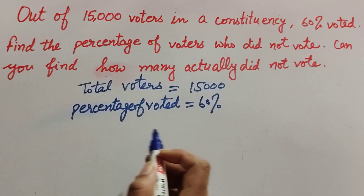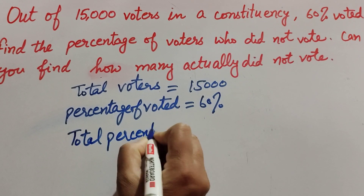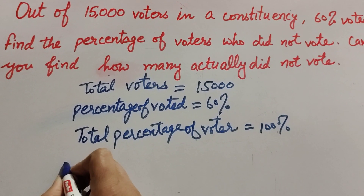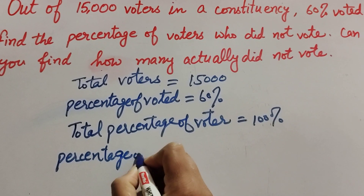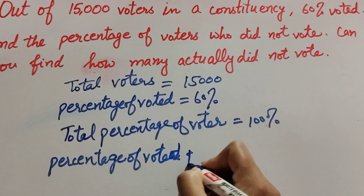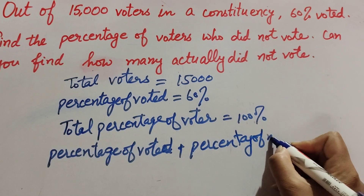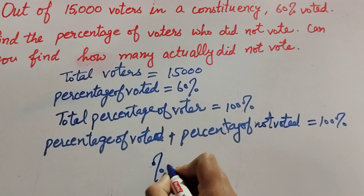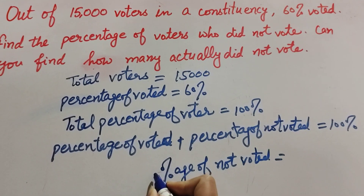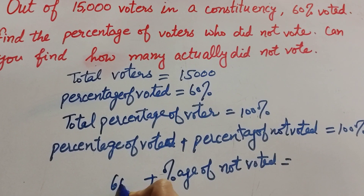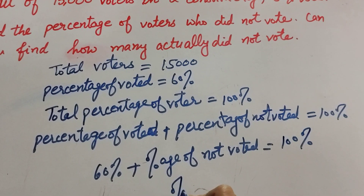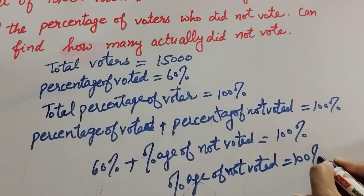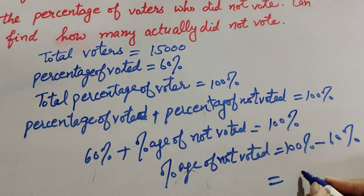Total percentage of voters equals 100%. So: percentage of voted plus percentage of not voted equals 100%. We have to find the percentage of not voted. Percentage of voted equals 60%, so: 60% plus percentage of not voted equals 100%.